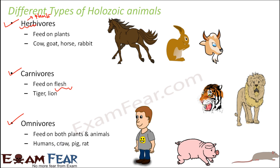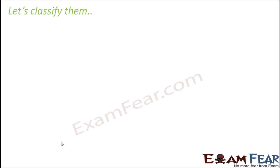Some animals can sometimes eat plants but mostly eat animals, because their body is designed to digest animals — these also fall under carnivores. For example, a cat mostly drinks milk and eats fish, so it is primarily a carnivore. Even if you give it a plant product and it eats a little, that doesn't make it a herbivore — cats are classified as carnivores.